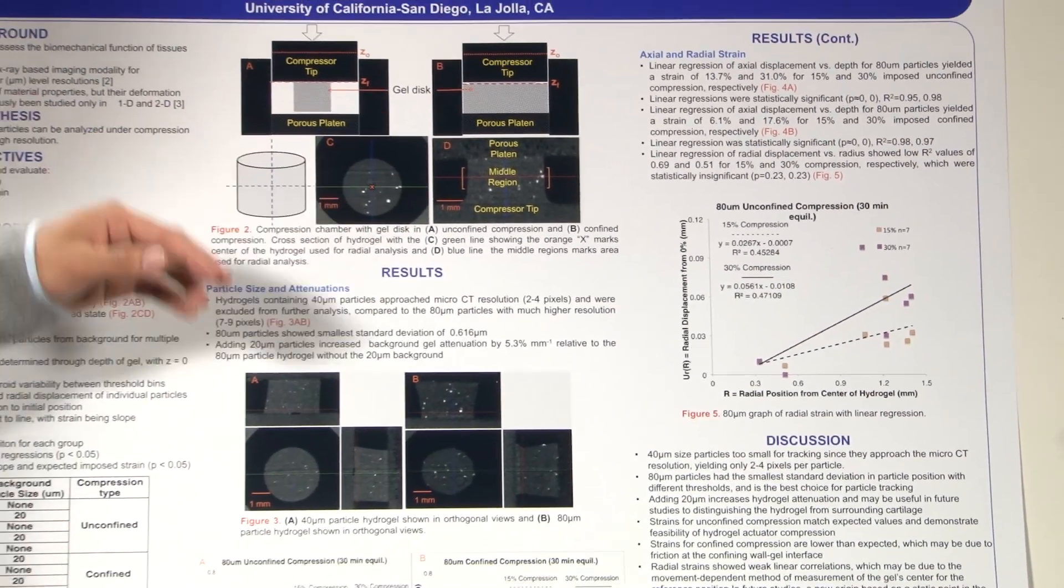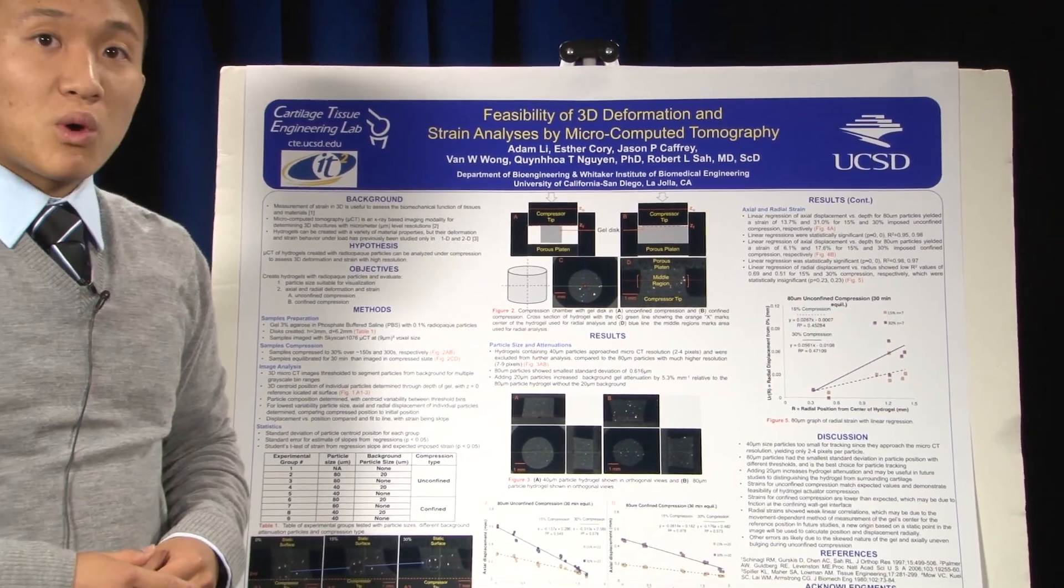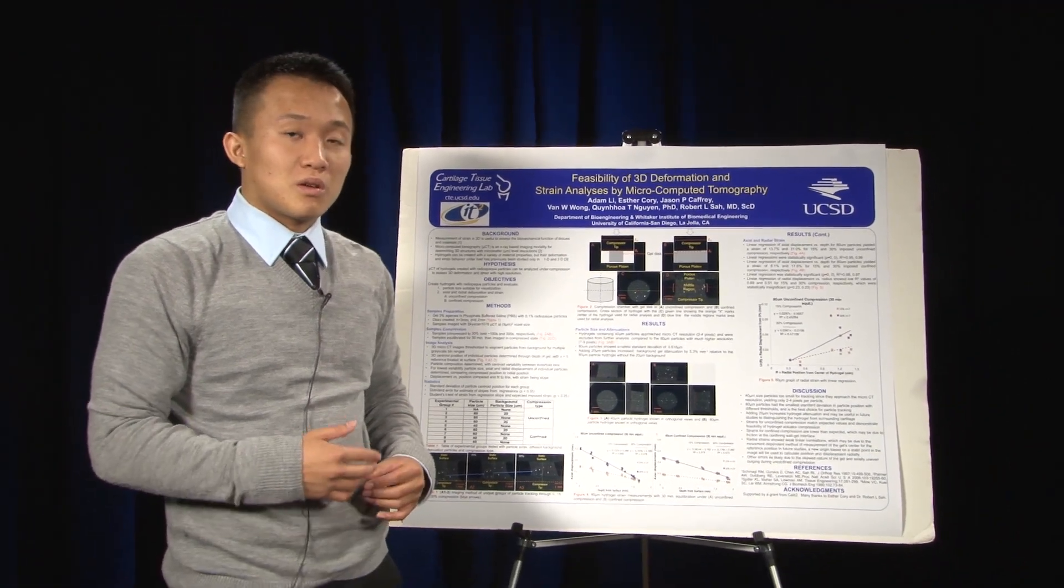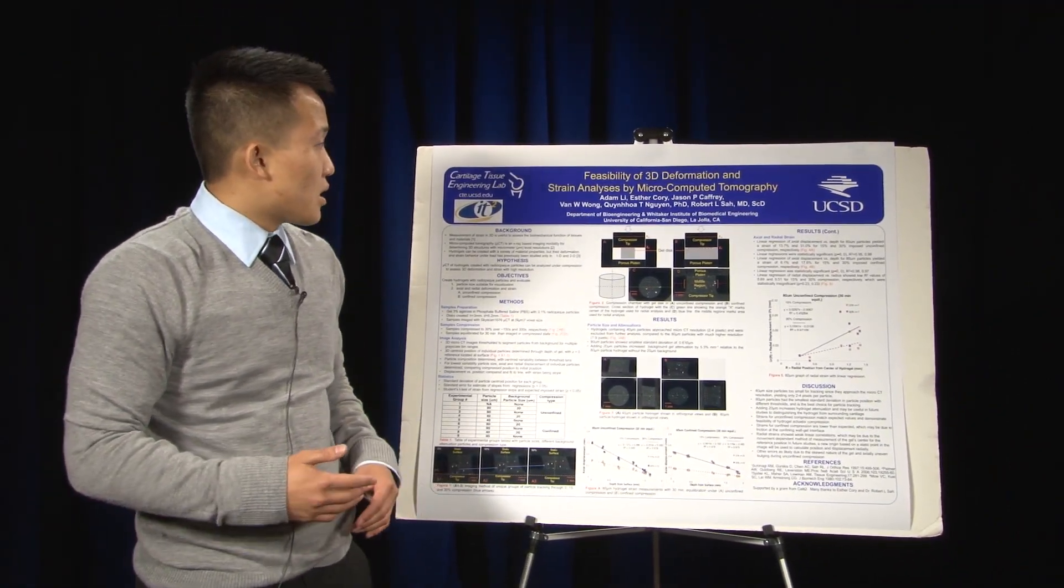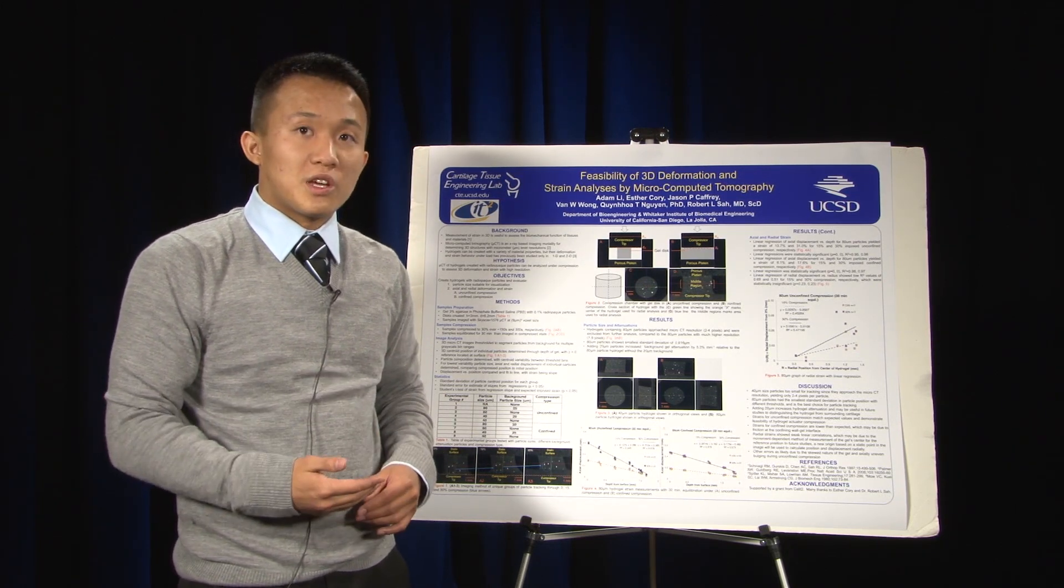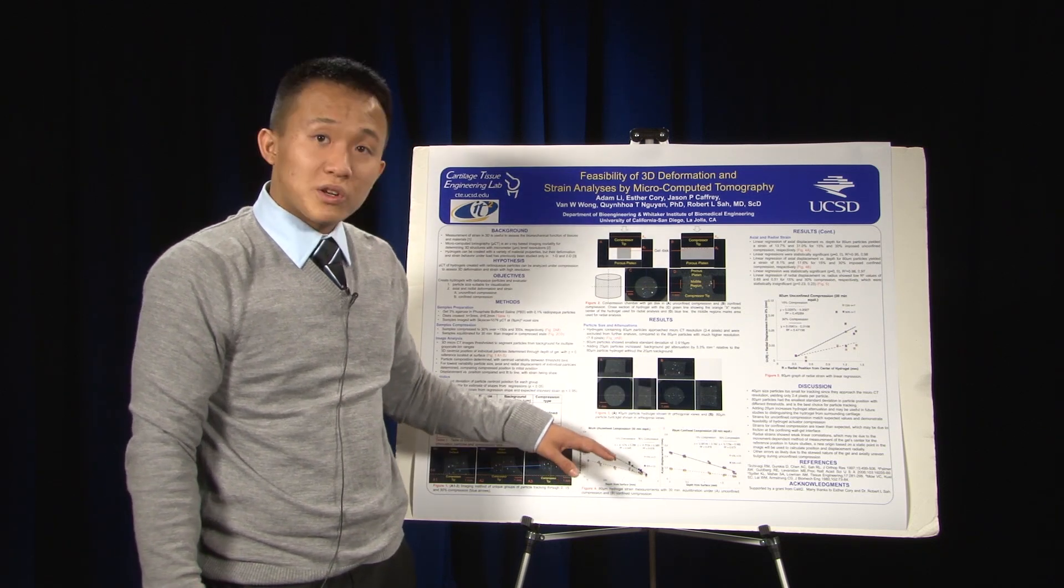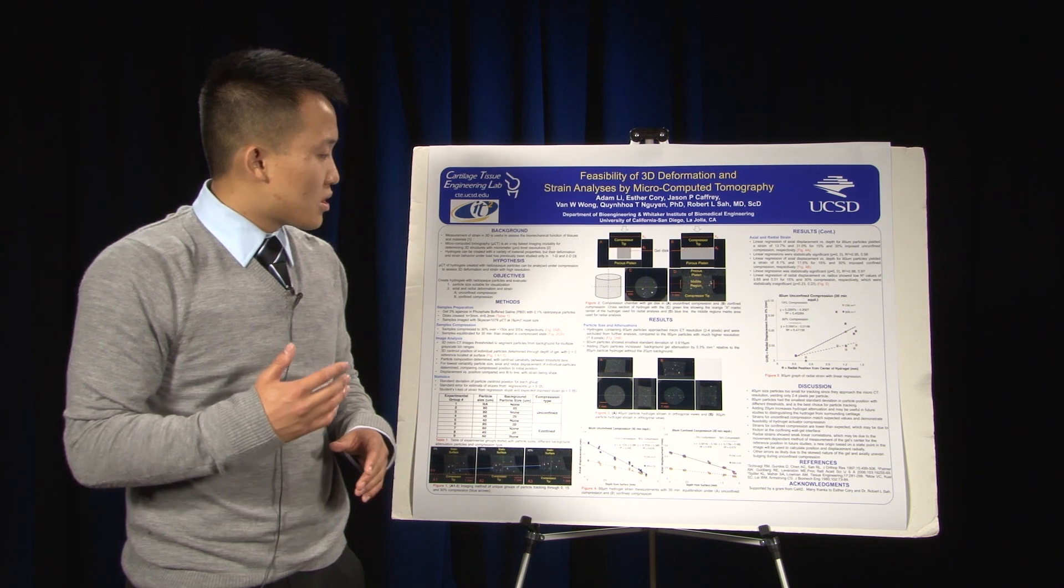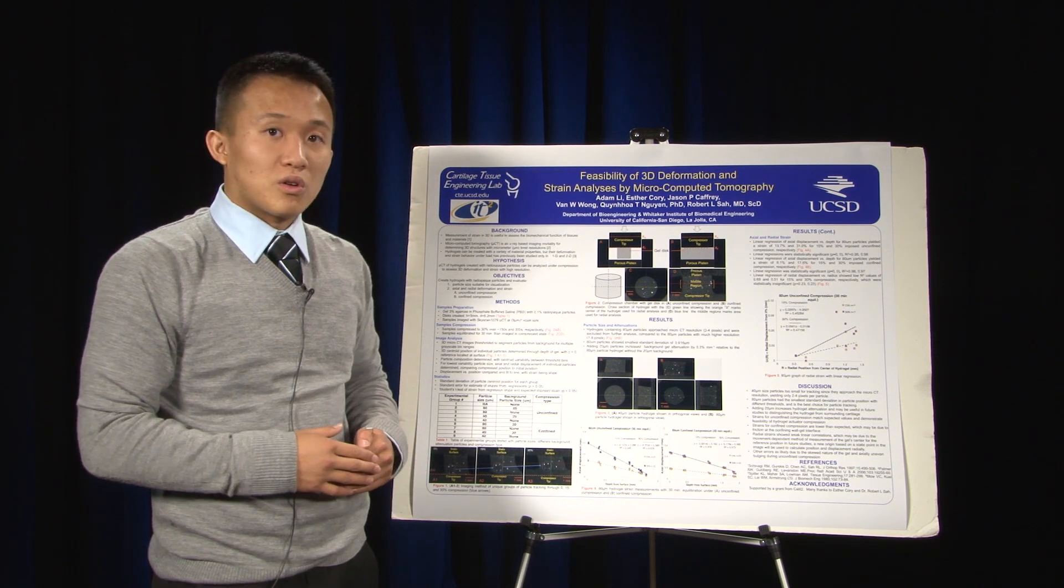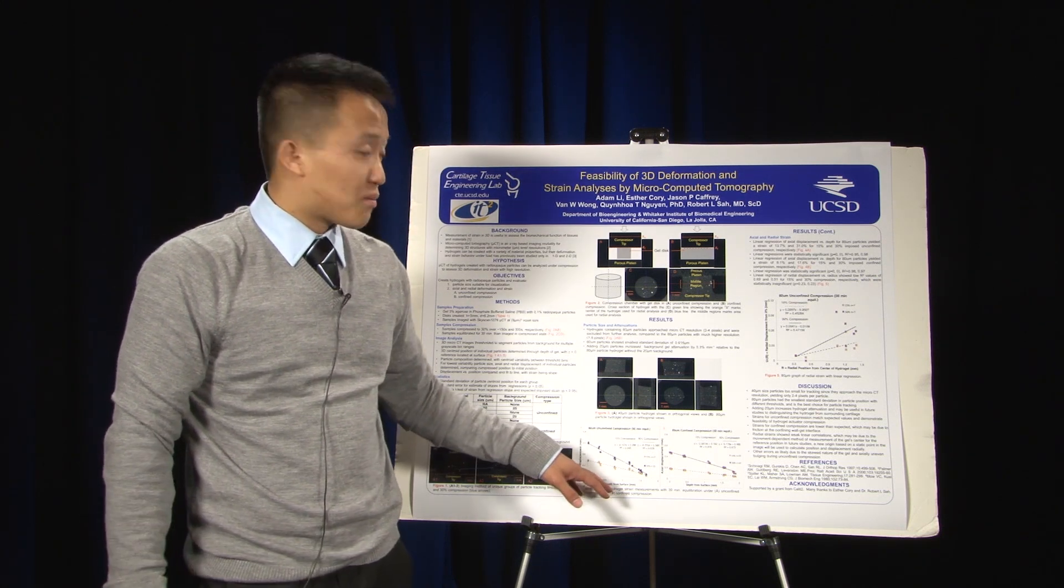For the linear regression of the confined compression experiment, we had a strain of 6.1 percent and 17.6 percent for the 15 and 30 percent compression respectively again. The linear regressions there were also statistically significant, and the r-square values were 0.98 and 0.97. As you can see here, the graphs all looked pretty linear and the r-square values were really high. We showed that there was a linear relationship with the displacement and depth from the surface.